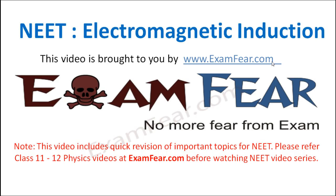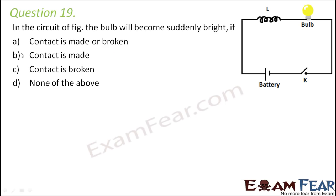This video on NEET electromagnetic induction is brought to you by examfier.com. Question number 19: In the circuit shown in the figure, the bulb will become suddenly bright if — contact is made, contact is broken, or none of the above?